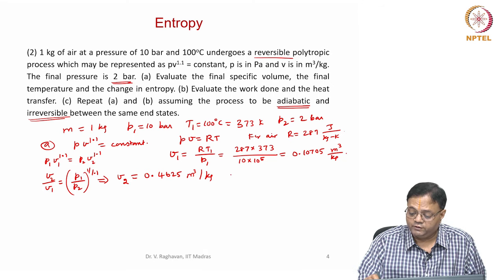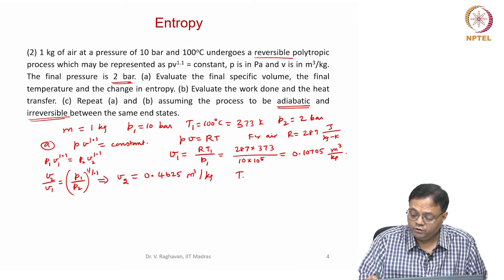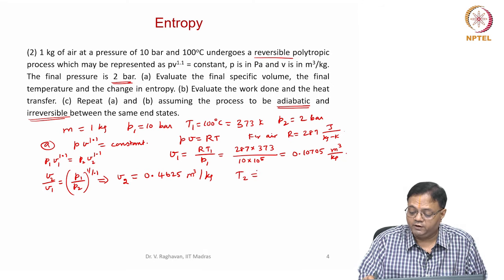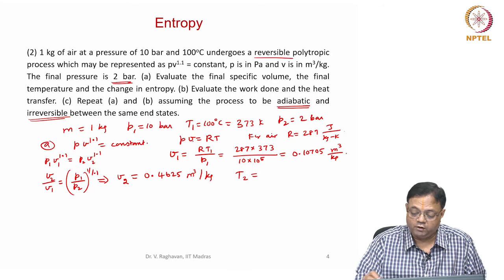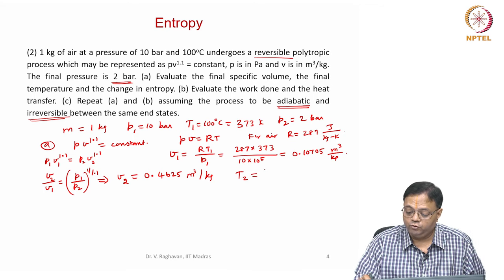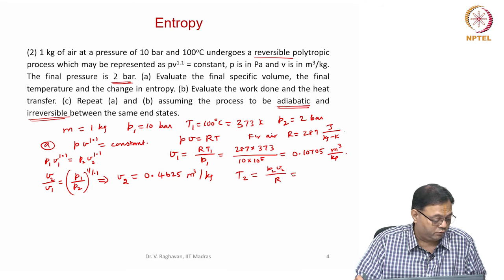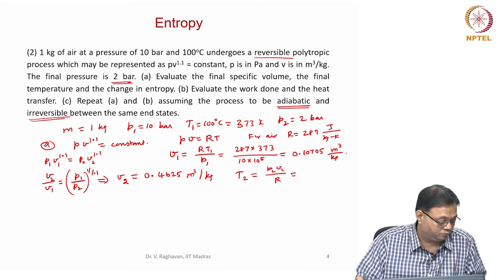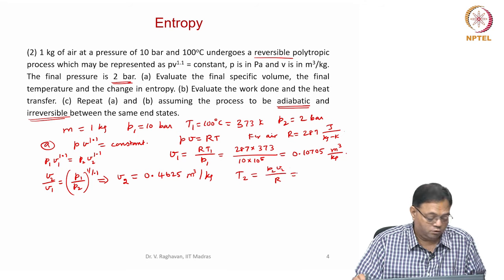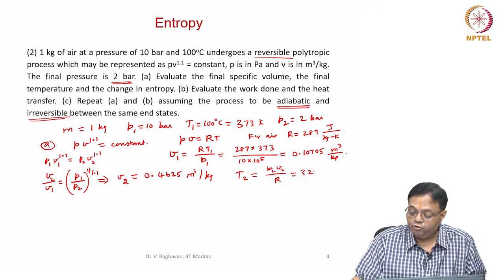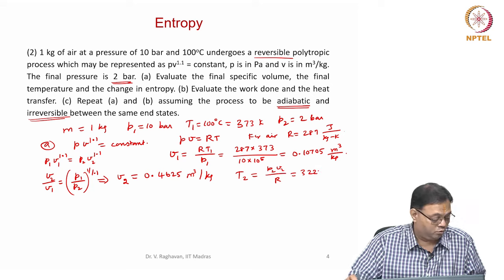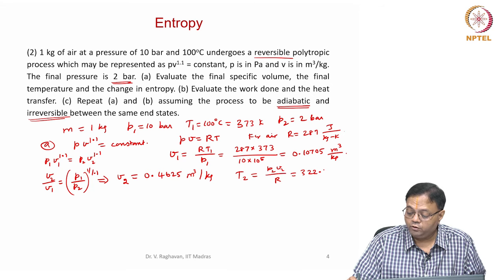Using the equation of state, T2 = P2·V2/R = 322.23 Kelvin. So we have found the final specific volume of 0.4625 and the final temperature of 322.23 Kelvin.